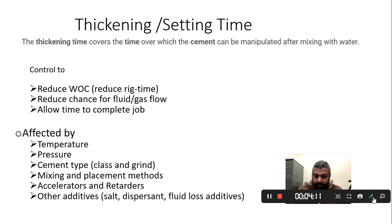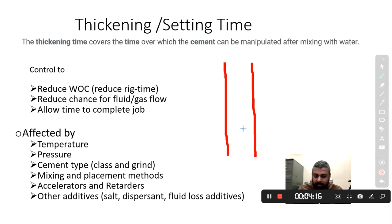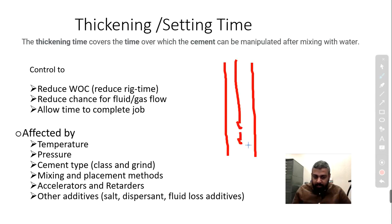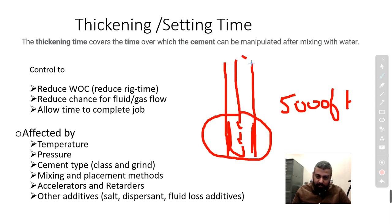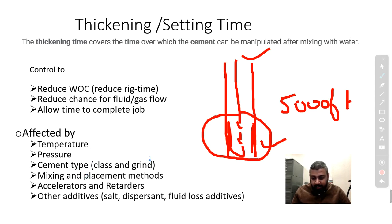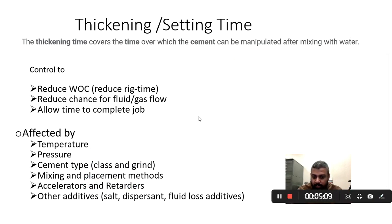In a deeper well — say 5000 feet — you need time for the cement to travel from the top to the target depth. At that depth, temperature is also very high. So we don't want the cement to set before it reaches the right place. That's why we need to change its thickening time and setting time. It's affected by temperature, pressure, cement class, placement method, and the additives used.